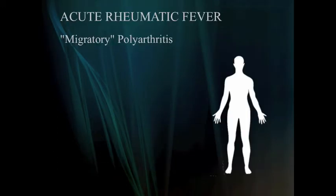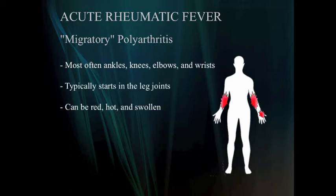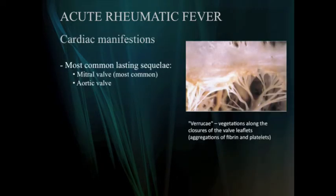Looking at the major manifestations more closely: the migratory polyarthritis usually starts at the legs and works its way upwards. It affects the large joints, often leaving them red, hot, and swollen. NSAIDs and aspirin readily relieve the pain.